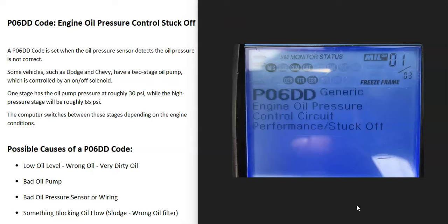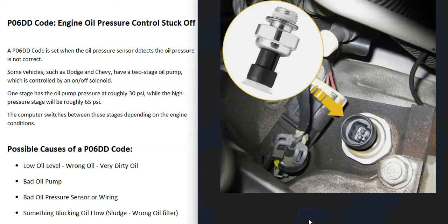It's engine oil pressure control stuck off. Basically, there's an engine oil pressure sensor that's monitoring the oil pressure, and for some reason it's not correct. The oil pressure is either too high or too low, or there's some kind of issue going on that it's outside the range of where the oil pressure should be. The computer is sending out this P06DD code, so it's going to require troubleshooting to find out why.